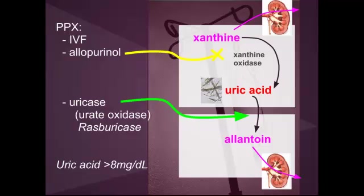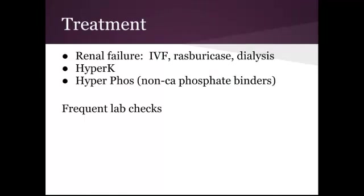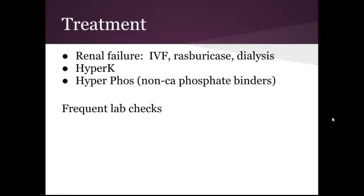You might see high-risk patients for tumor lysis syndrome come in already taking rasburicase. Treatment is based on a couple of different issues: renal failure management with IV fluids and enzymes, and of course dialysis if things are getting much worse. You also need to treat the electrolyte derangements — for example, the hyperkalemia needs to be treated, and the hyperphosphatemia can be treated with phosphate binders. Make sure you're tracking labs frequently.